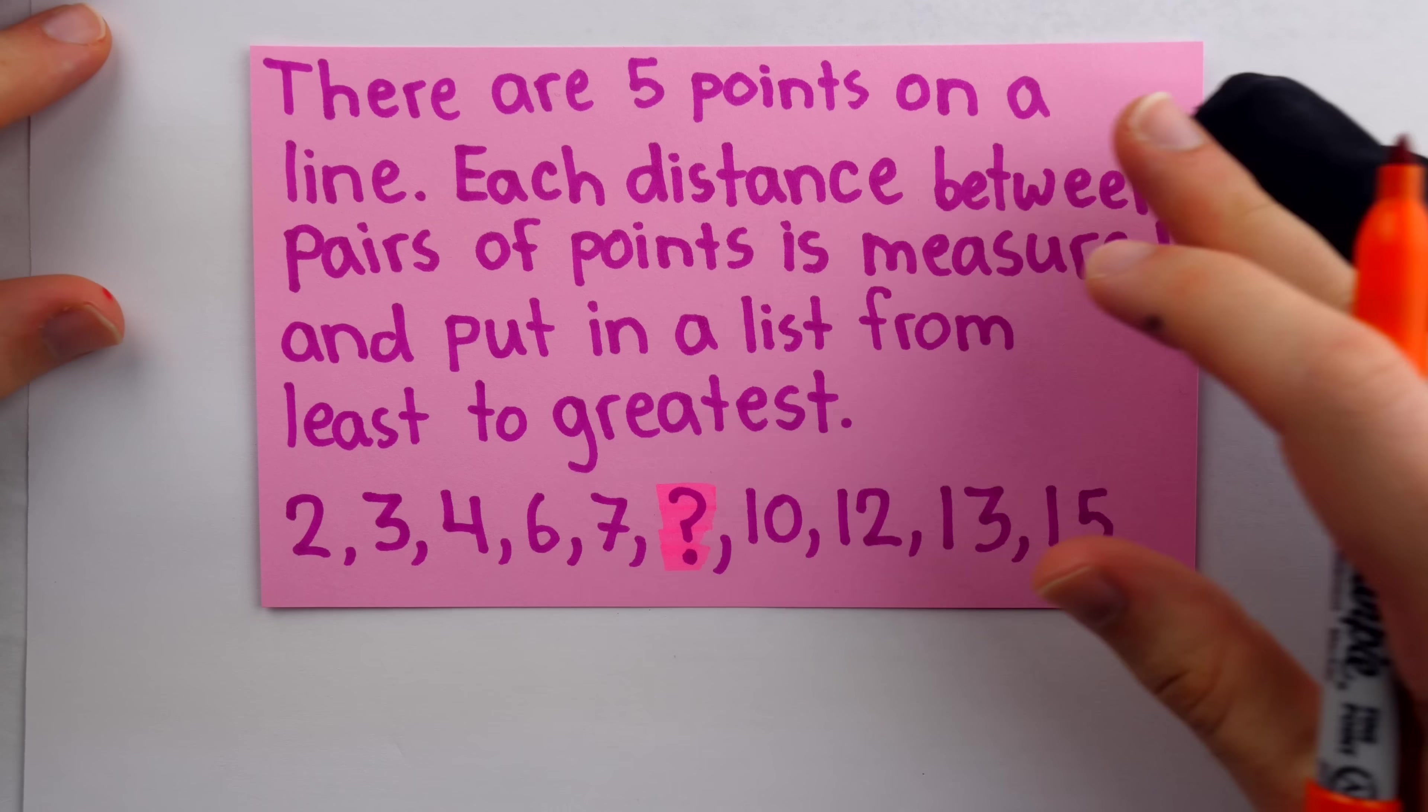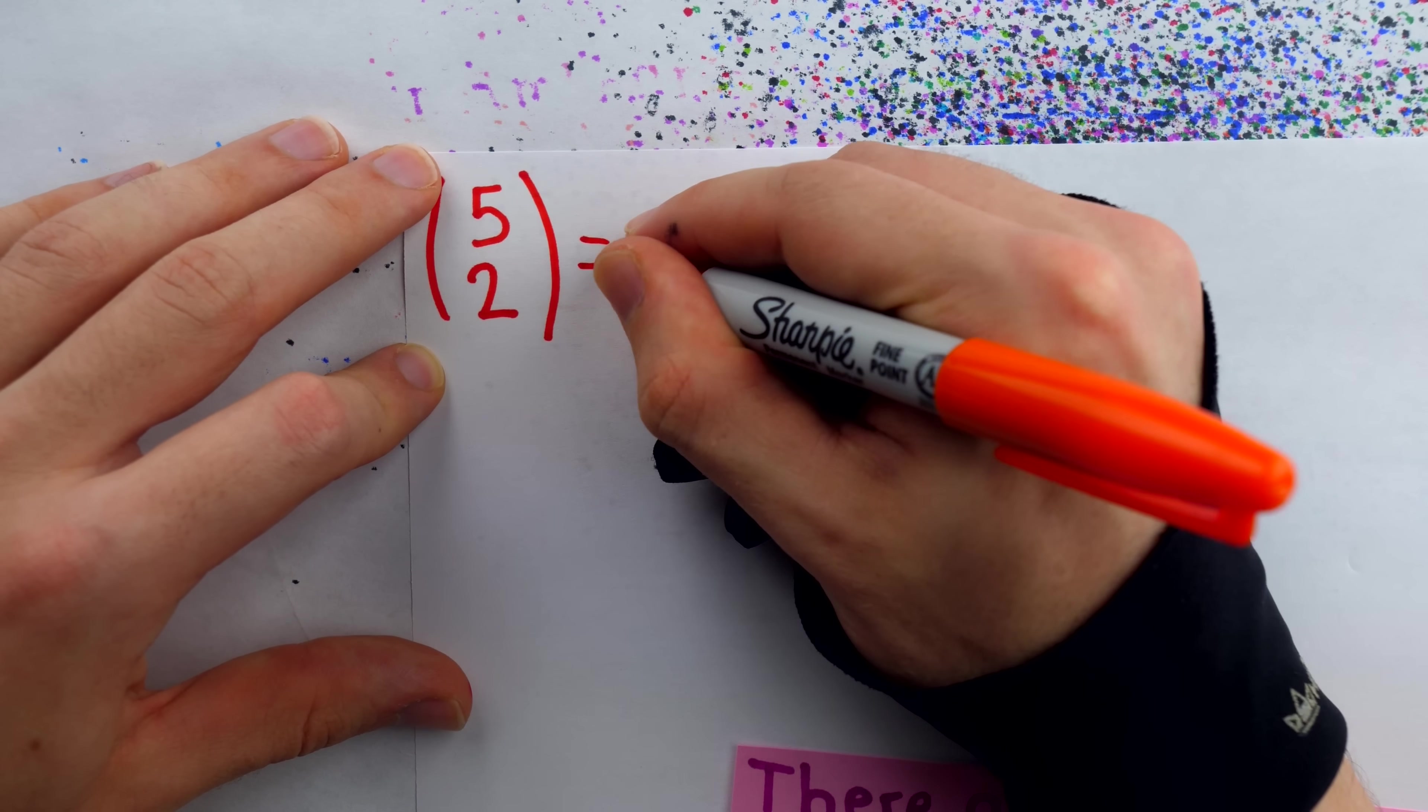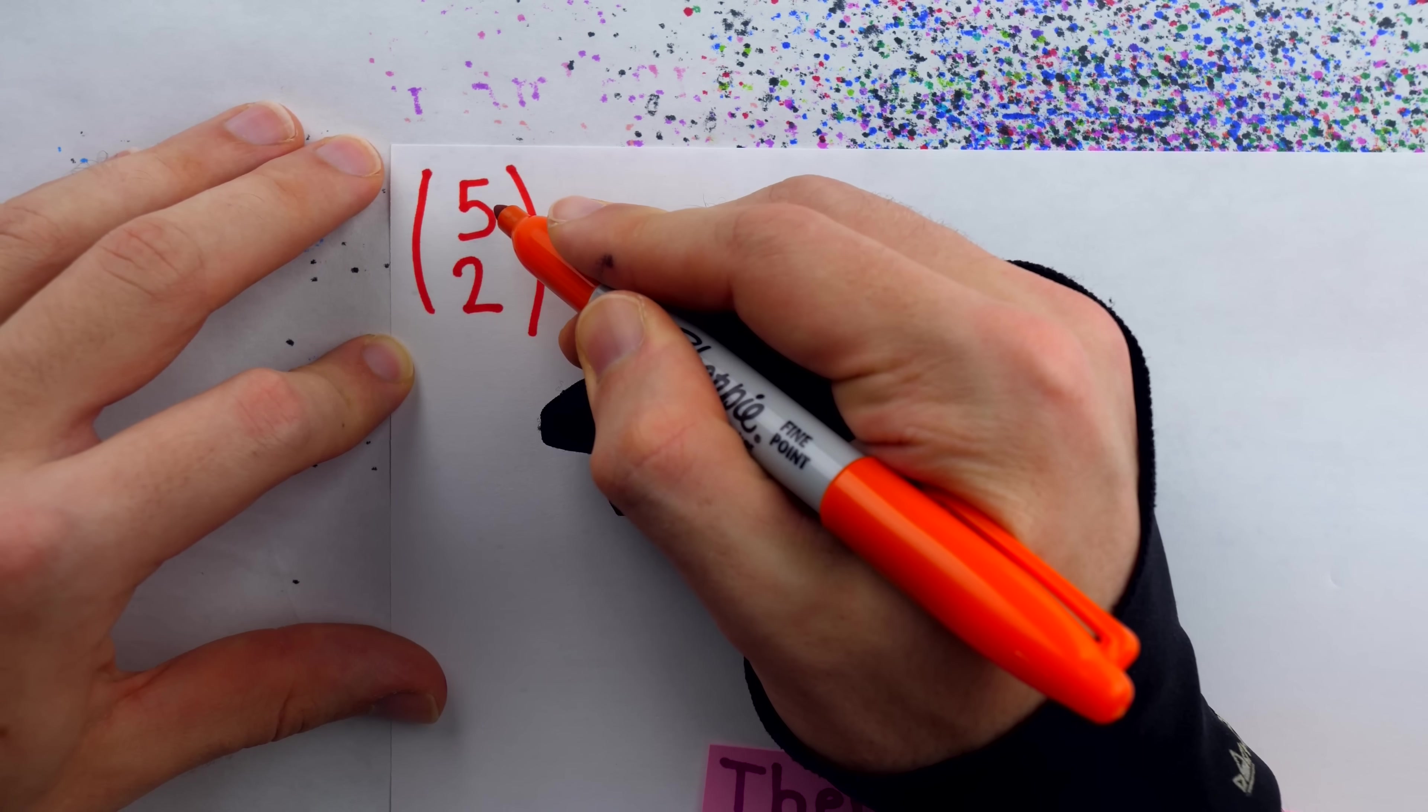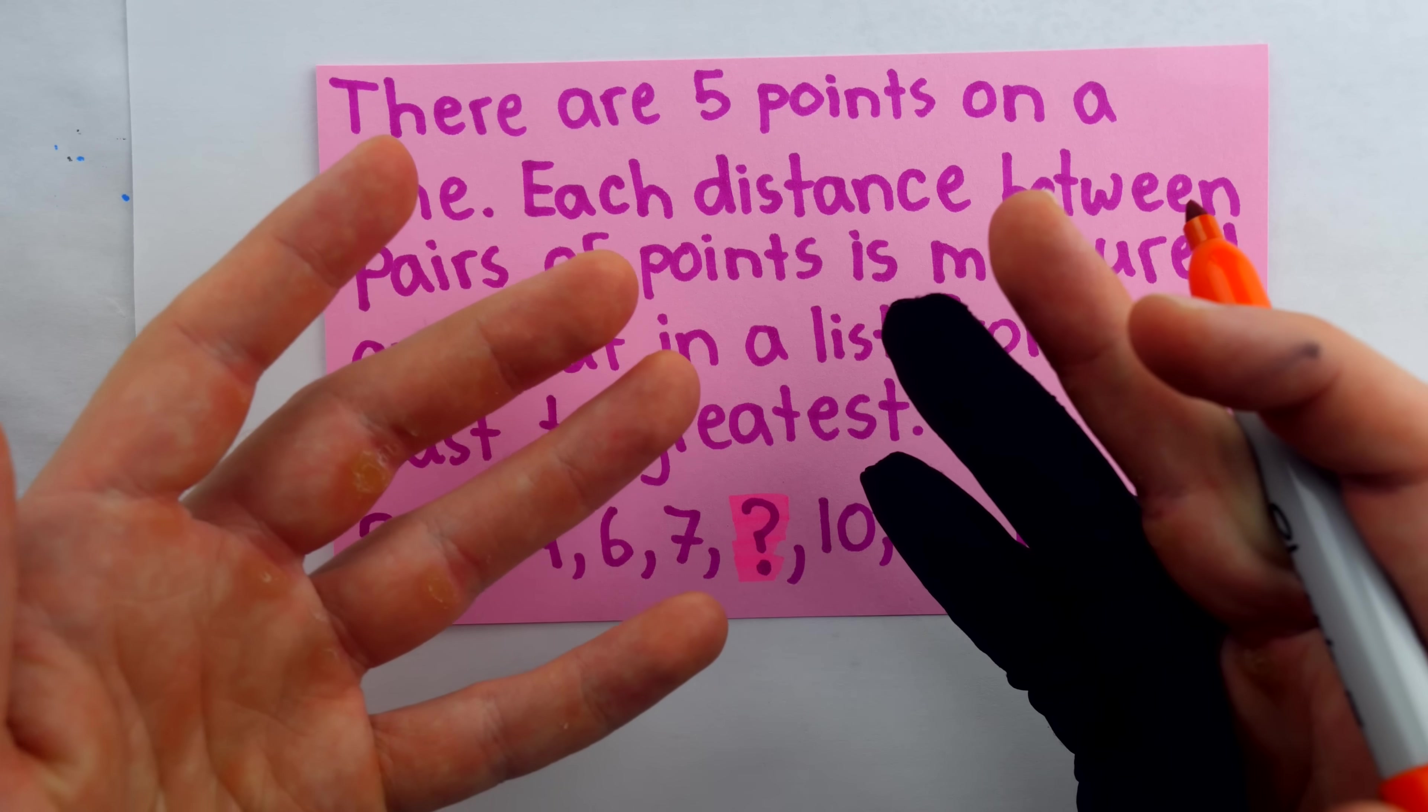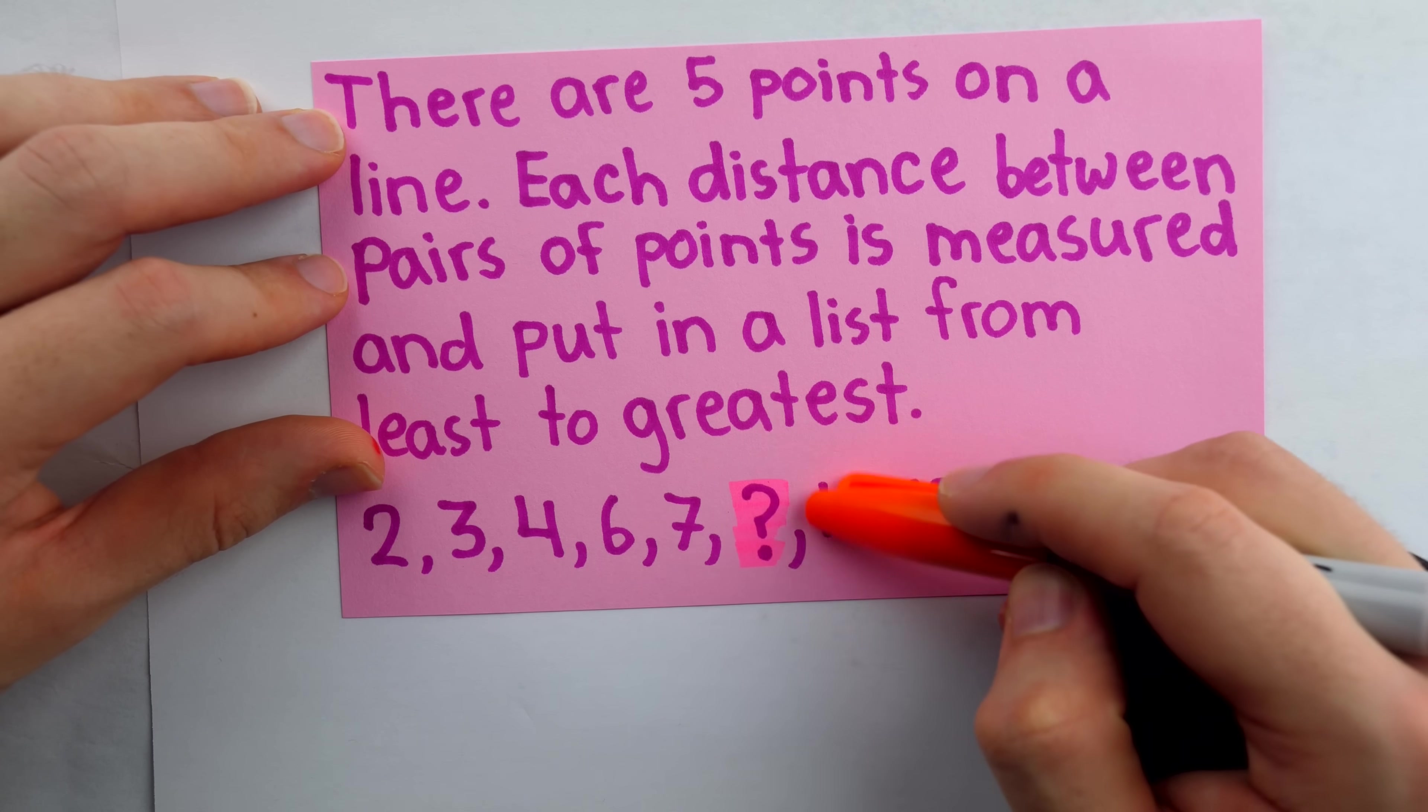One of the first things you might wonder is if any distances between points were duplicates and maybe only included once in the list. But then if you know combinatorics, you know that if there are five points and we're picking two of them to measure a distance, there's only 10 ways to do that. This is read as five choose two. This says there are 10 ways to choose two points from a collection of five. So if we measured the distances between every pair of points, that would be exactly 10 distances. And we see there are exactly 10 items in the list. Hence,